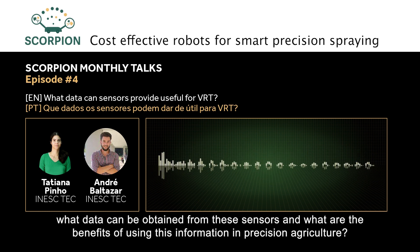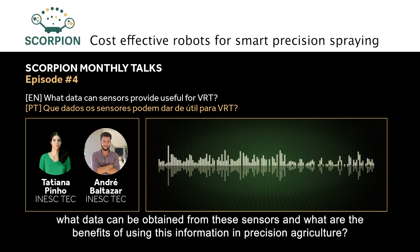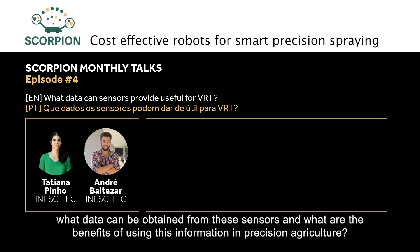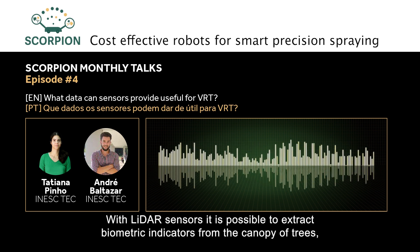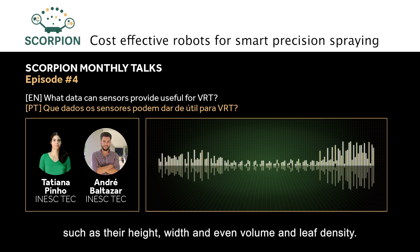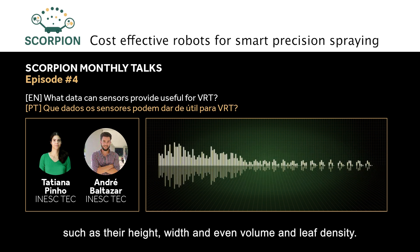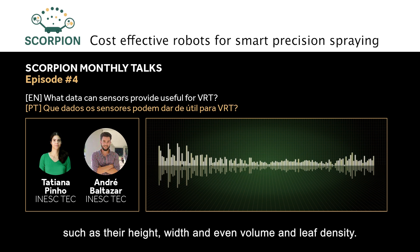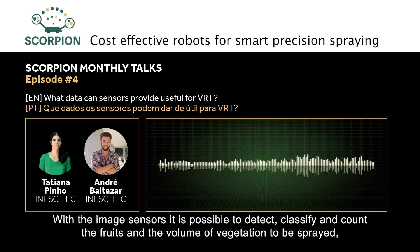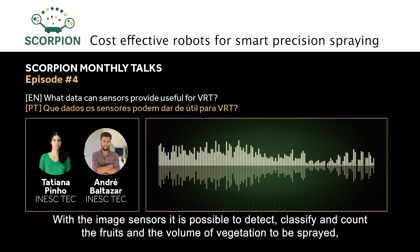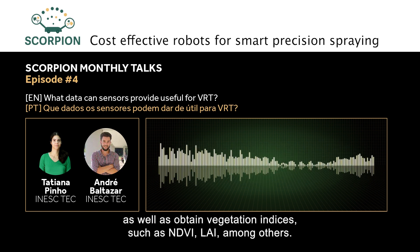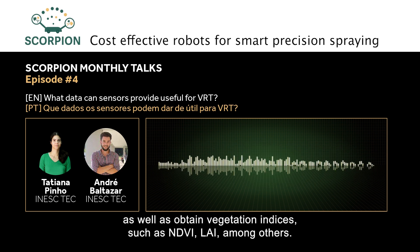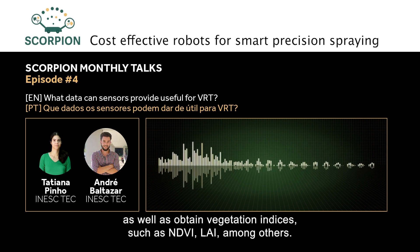Regarding the data — what data can be obtained from these sensors and what are the benefits of using this information in precision agriculture? With LiDAR-type sensors it is possible to extract biometric indicators of the tree canopy, such as height, width, and even volume and leaf density. With image sensors it is possible to detect, classify and count fruit, the volume of vegetation to be sprayed, as well as obtain vegetation indices such as NDVI, LAI, among others.